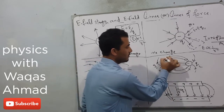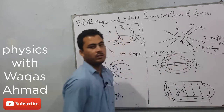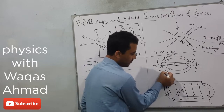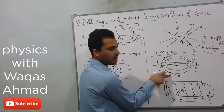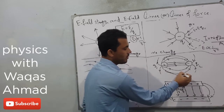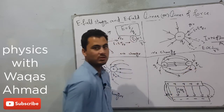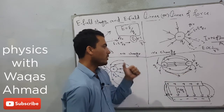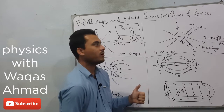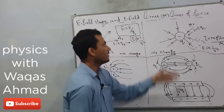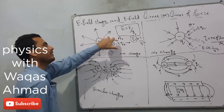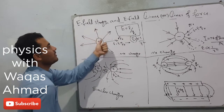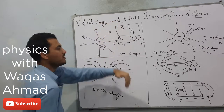The direction of the electric field at any point on a curved field line can be found by drawing a tangent to that curved path. Drawing a tangent line at a point gives the direction of the electric field at that point. For straight radial field lines, the direction of the electric field is simply along those lines. This allows you to find the electric field intensity direction at different points.